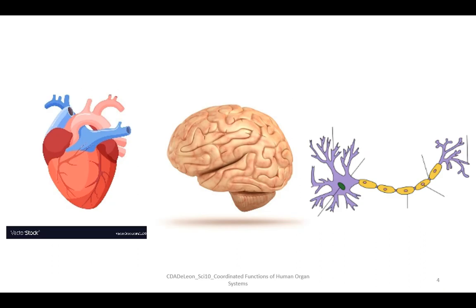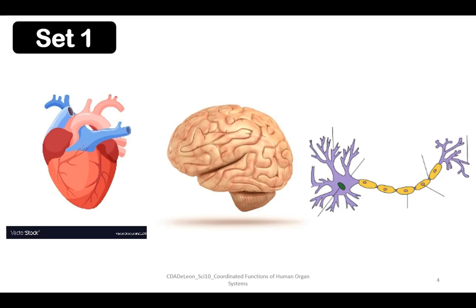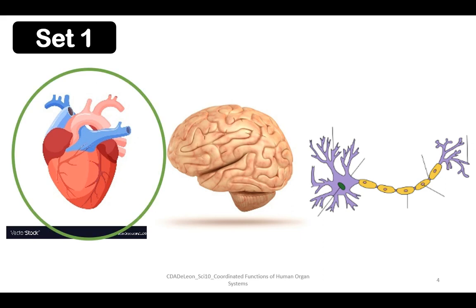For the first set, we have heart, brain, and nerve. So what do you think is the organ which does not belong to the group? The answer is heart, because the heart belongs to the circulatory system.